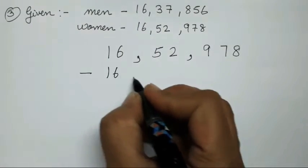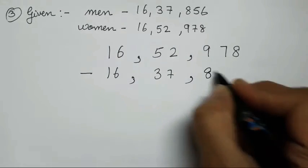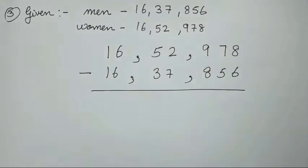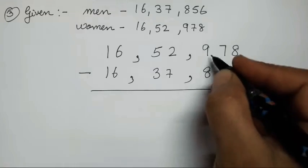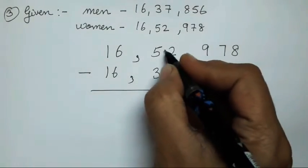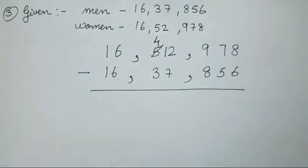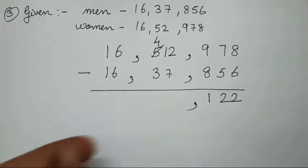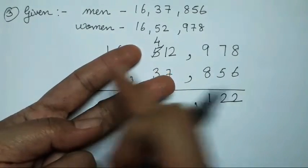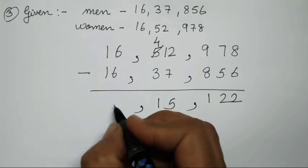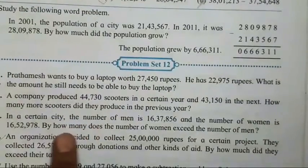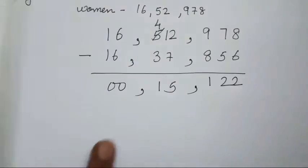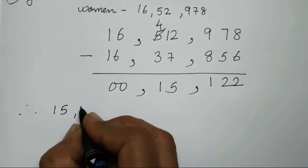Write the women's number above and the men's number below since it is smaller. 16,52,978 minus 16,37,856. We can subtract eight minus six, seven minus five, nine minus eight directly. But two minus seven we cannot, so we borrow one from five — five becomes four. Solving: two; after seven count to twelve gives five; four minus three is one; these two give zeros. Result: 15,122.